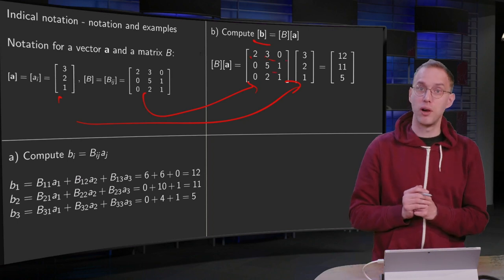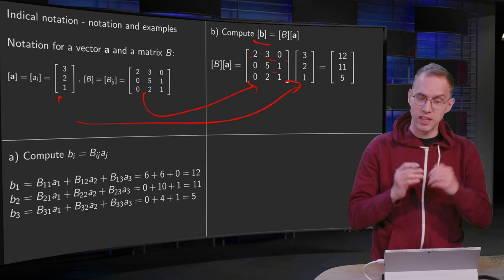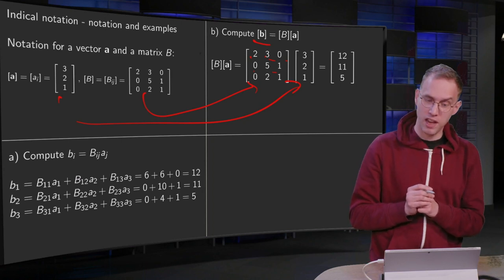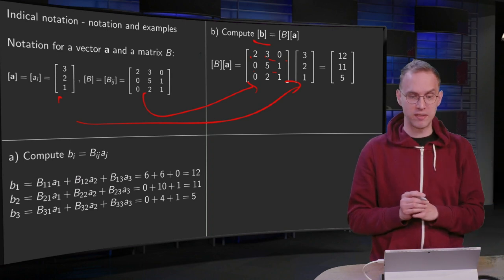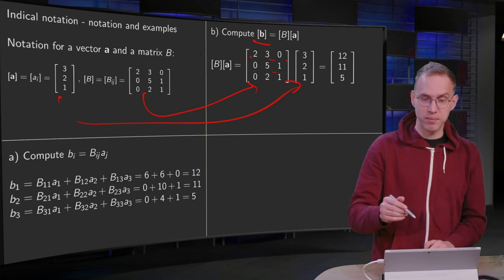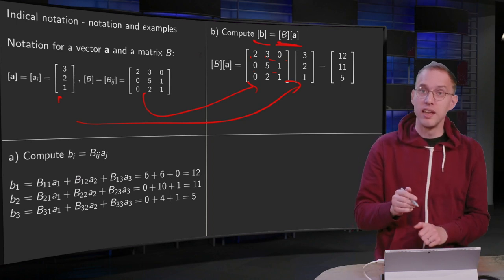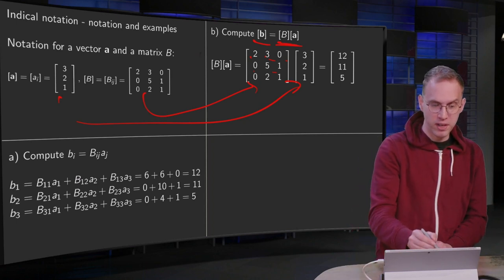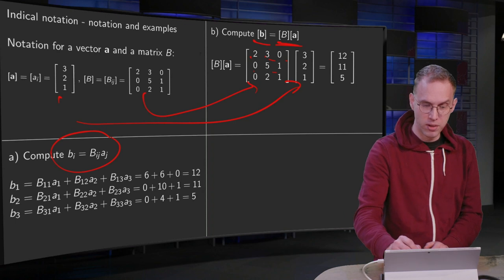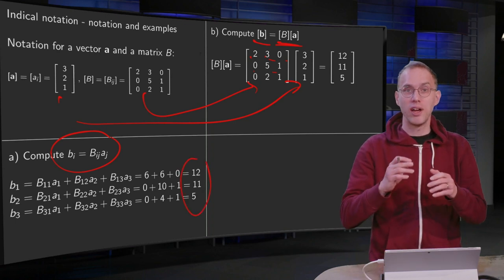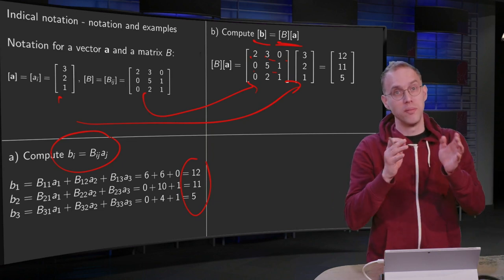So first row, 2, 3, 0 in a product with 3, 2, 1 gives you 6 plus 6 plus 0 equals 12. Second component, 0 plus 10 plus 1 equals 11. Third component, 0 plus 4 plus 1 equals 5. So you get the vector 12, 11, 5. And what you see is that actually this product over here, matrix B times vector a yielding a vector b, does actually the same as what you have been doing here in the indicial notation, if you view these as components of the vector b. So actually, indicial notation is an alternative way to write matrix times vector.